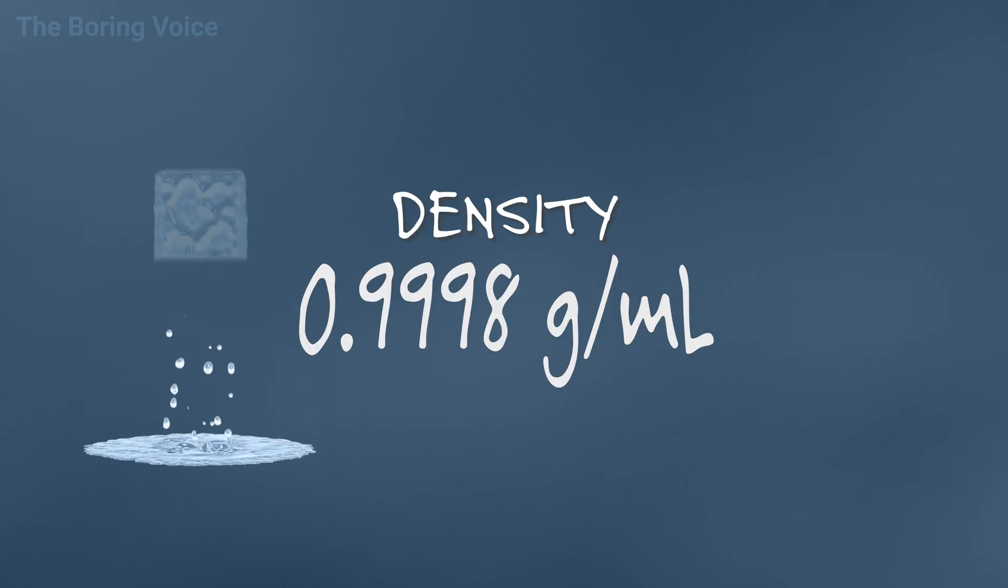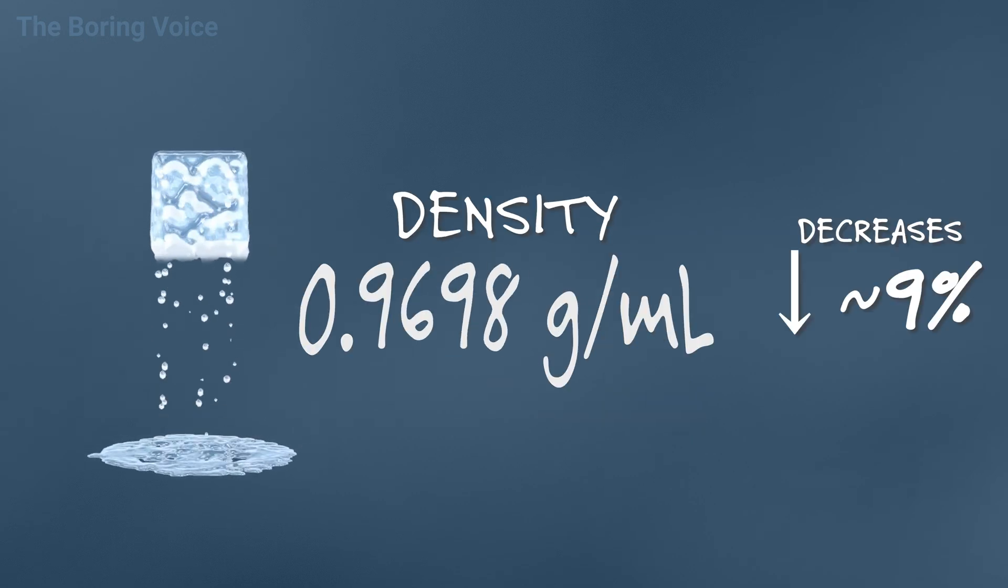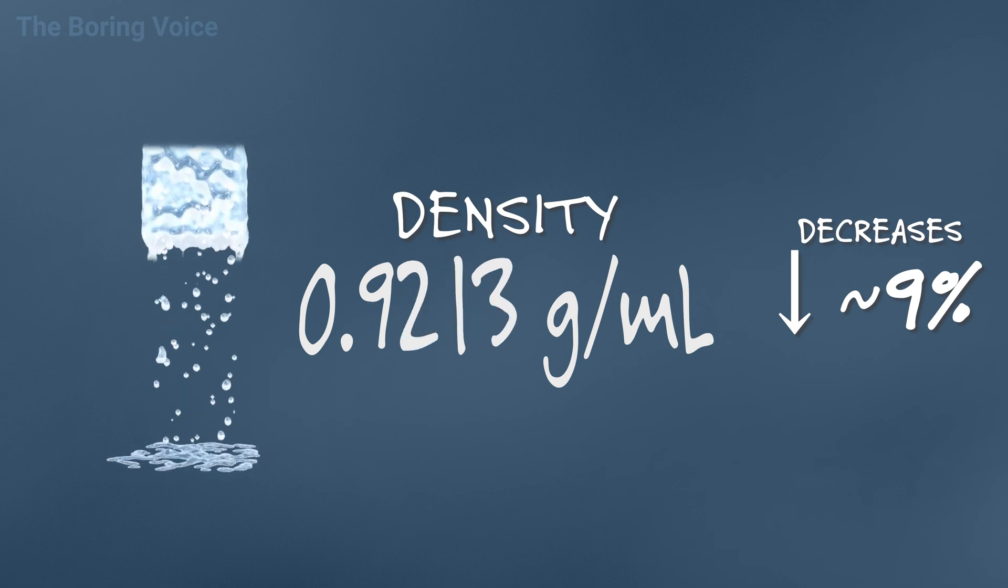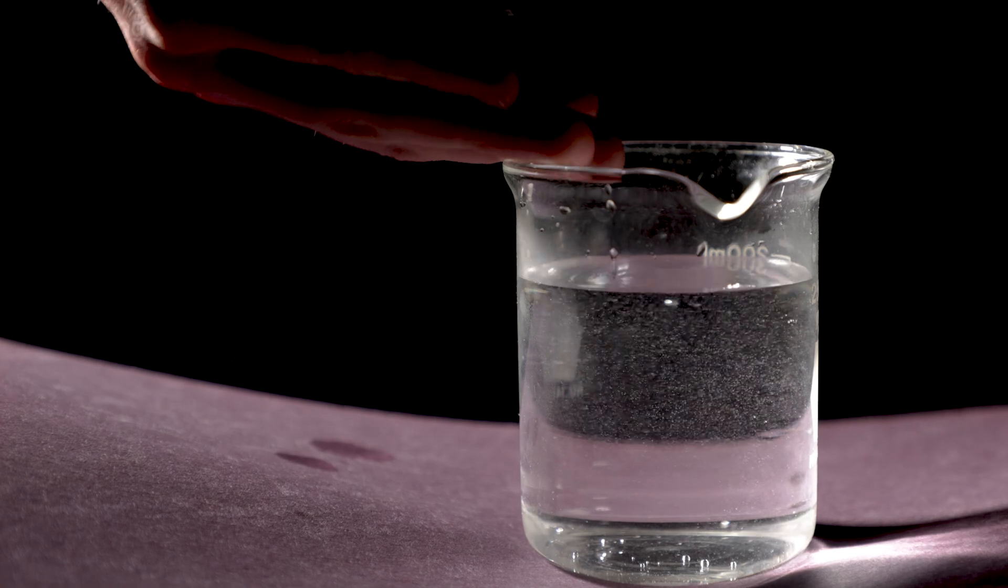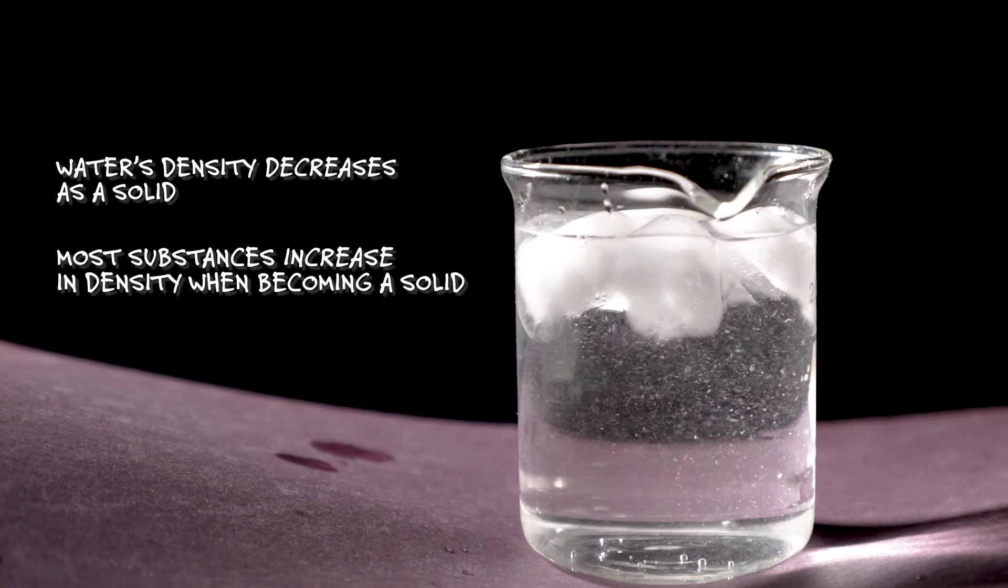When water transitions to a solid, its density decreases almost 9% to 0.9167 grams per milliliter. Water is unusual because its density decreases when it is in a solid state.